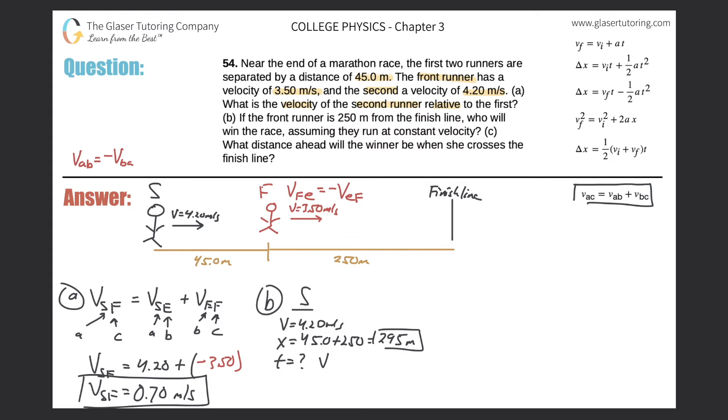I can easily now solve for time, just simply use v equals x over t formula. So the velocity here was 4.20, the displacement was 295, and over time. So just do your cross multiplication. So t equals 295 divided by 4.2. And it's going to take this individual about 70.2 seconds.